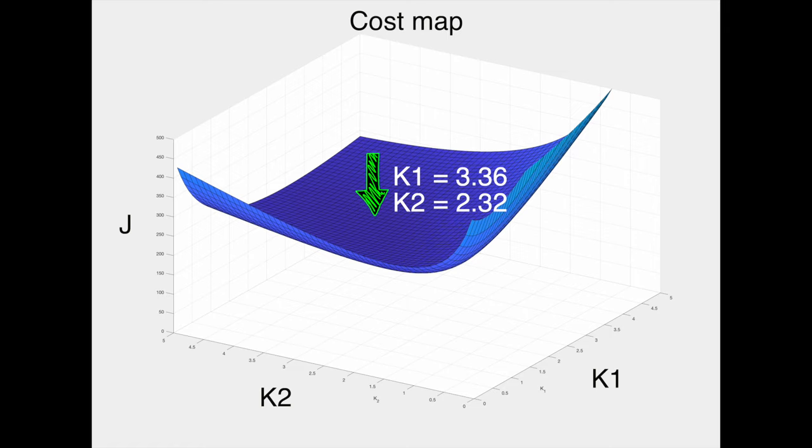So this brute force way is one way to solve the LQR problem. But as you can probably imagine, it's entirely too inefficient in most cases. I mean, who has the time to calculate every possible gain combination, especially for more complex systems? So with that in mind, let's just move on to a different method.